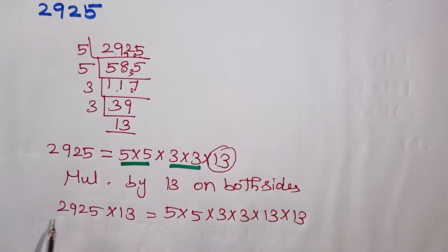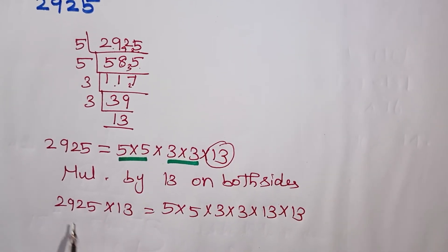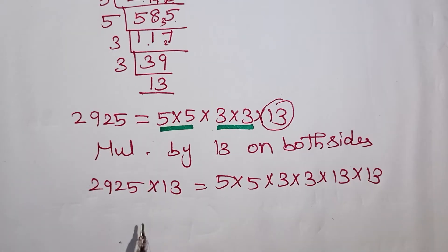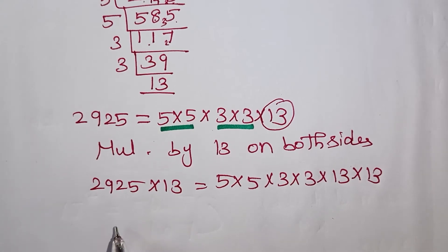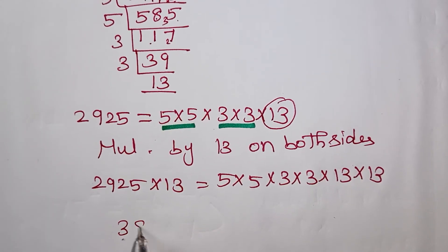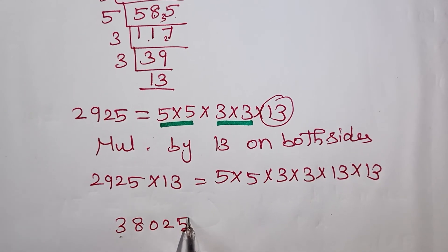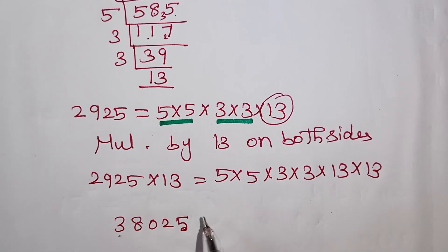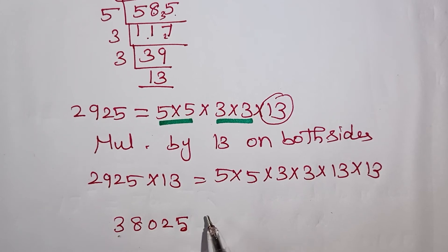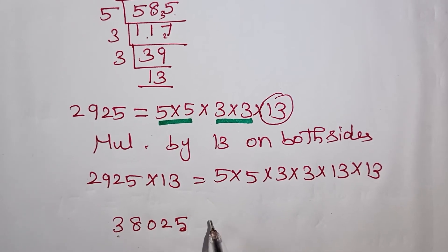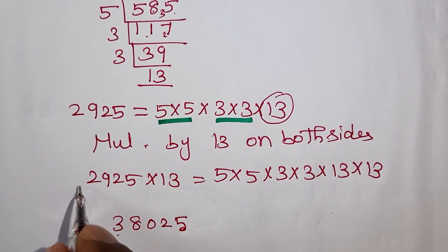If we multiply 2925 by 13, the answer is 38025. This answer is the perfect square. You can write this number, and its square root can be found. It's very simple.